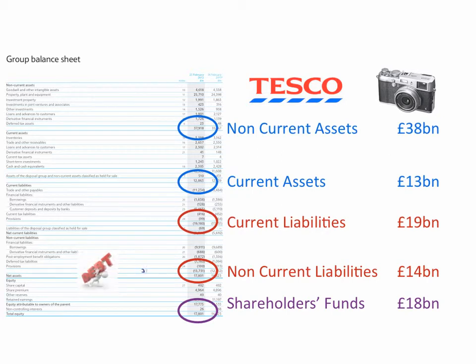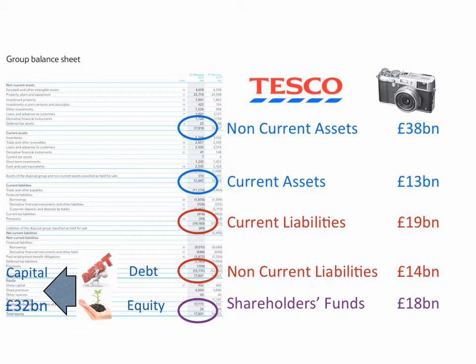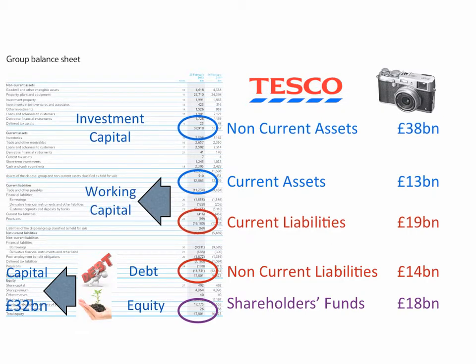Tesco is funded via debt and equity. The debt of £14 billion and the equity of £18 billion together make the total capital employed in Tesco of £32 billion. Tesco has invested £38 billion into the assets that it uses to run the business, primarily buildings out of which to operate. Tesco also has working capital that it needs to run the business on a day-to-day basis, i.e. to meet its obligations as they fall due. Due to its business model, it's able to operate on negative working capital of £6 billion.